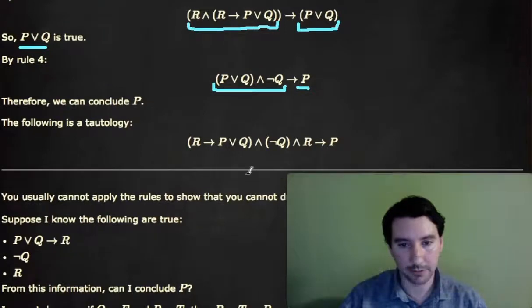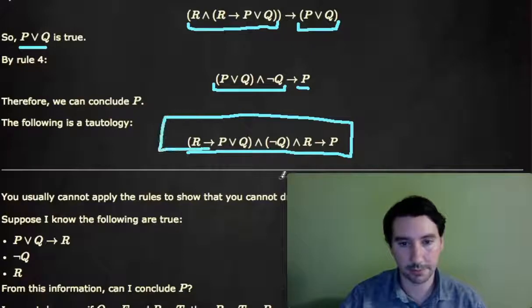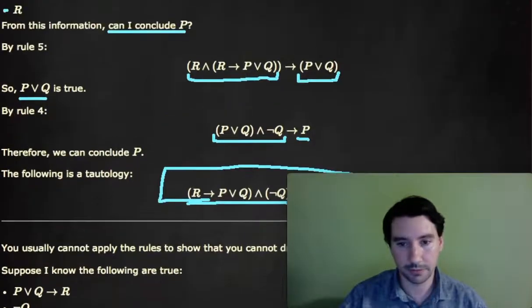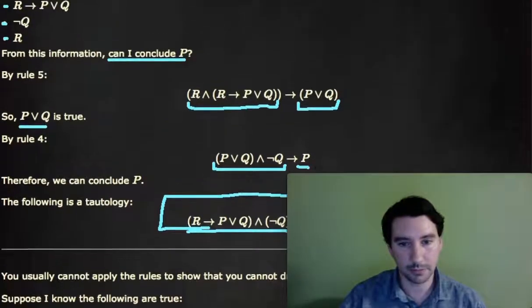And therefore, the following is a tautology: R implies P or Q, and not Q, and R altogether implies P. Even though when I was deducing P, I had to introduce some intermediate statements.